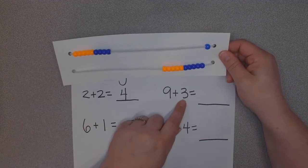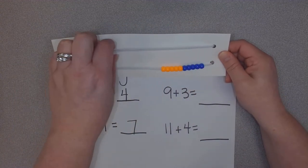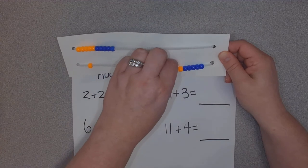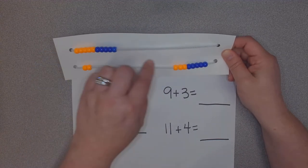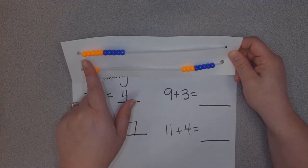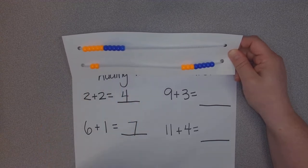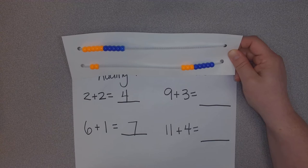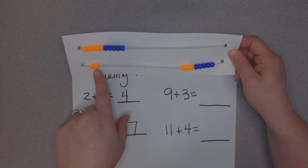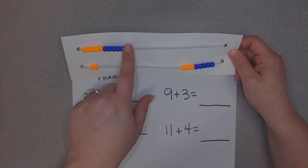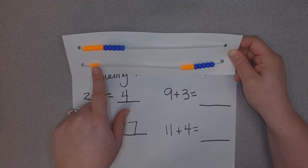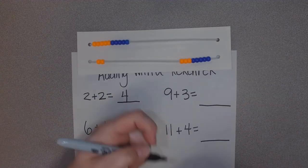And I need to add three more. I'll put this one here, two, three. So 9+3 can also look like 10+2. That's a little easier to add up. Ten and two makes twelve. Ten, eleven, twelve. There's my answer, twelve.